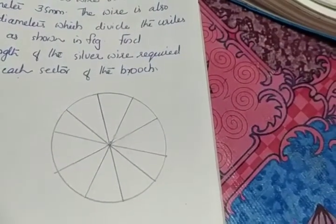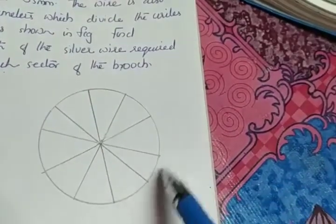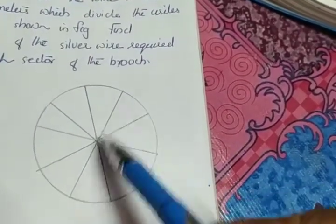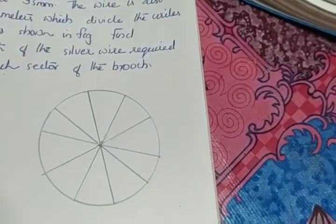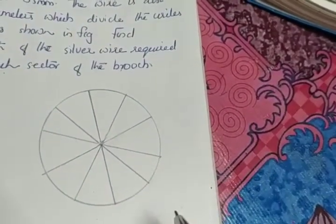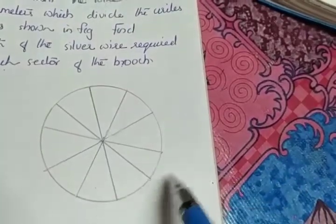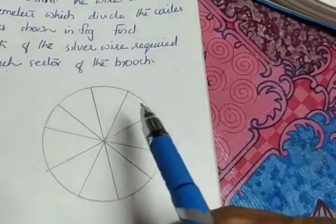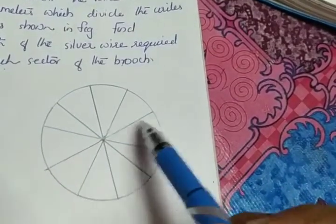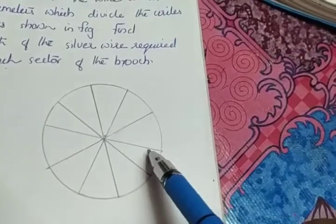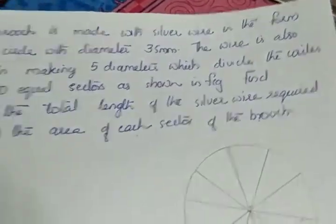This is the figure given in the question. There is a circle made of silver and there are 5 diameters which divide the full brooch into 10 equal sectors. Whatever we draw with the pencil — all are silver wires. That means we have to find the circumference of the circle plus the length of 5 diameters. The diameter is already given in the question as 35 mm.